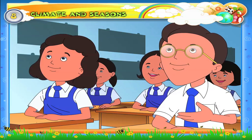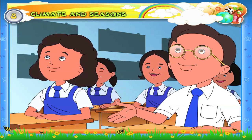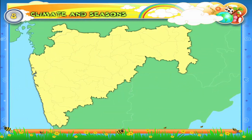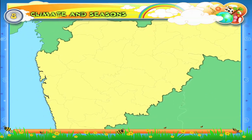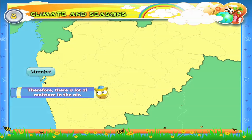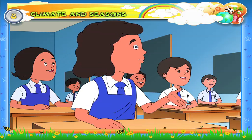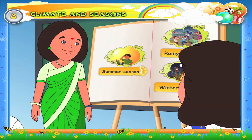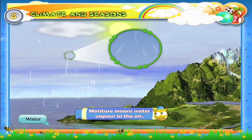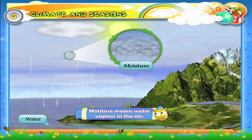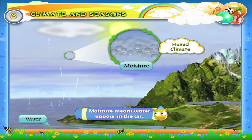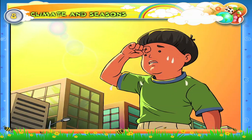A student asks about the climate of Mumbai. The teacher explains using a map: Mumbai is near the sea, so there is a lot of moisture in the air. Moisture means water vapour in the air. When there is moisture in the air, the climate is known as humid climate. We normally sweat a lot in humid conditions.